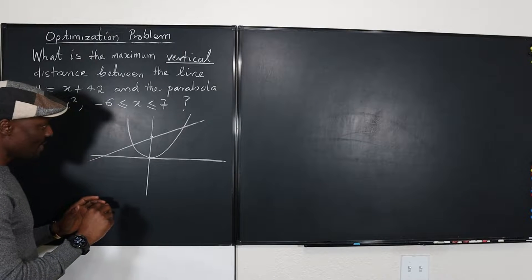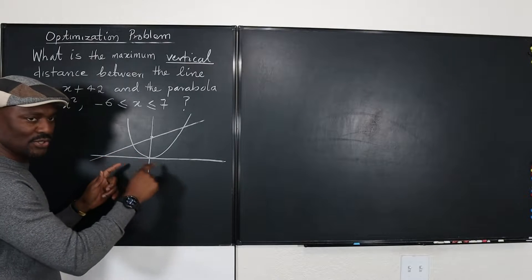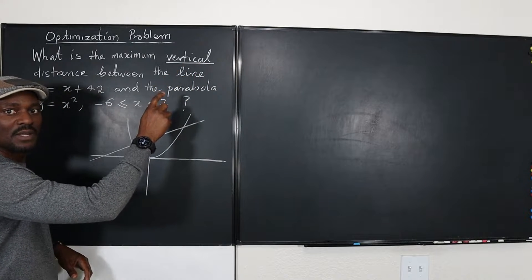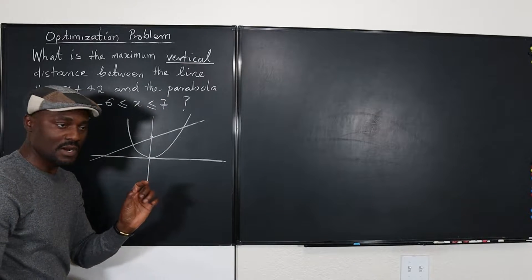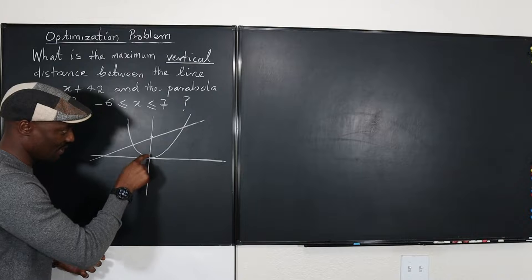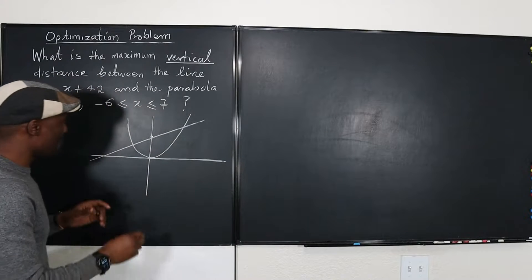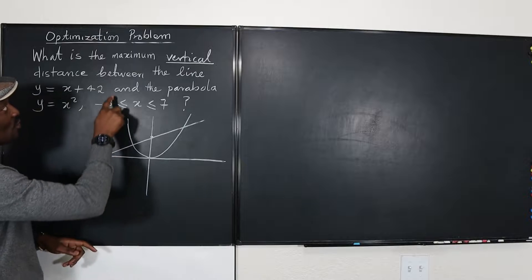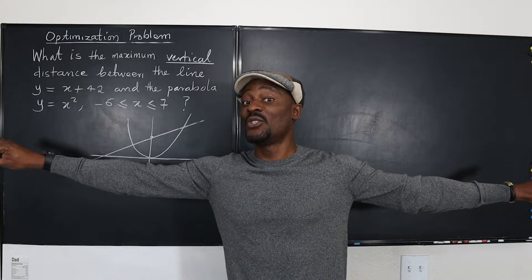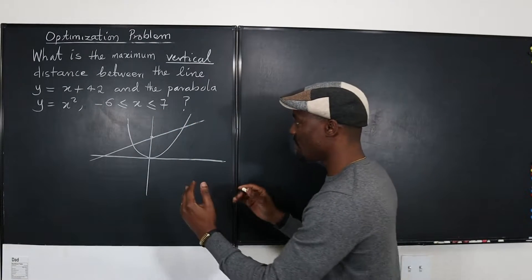The distance between this function and this curve can be measured from anywhere — you can measure from here to here, that would be a horizontal line. But we're referring to the vertical distance, so it has to be as if you place a ruler and draw a vertical line. The length of this line will be the distance between the two, and we're looking for where that distance is greatest. The question says don't go all the way to the left or all the way to the right — stay between negative six and seven.